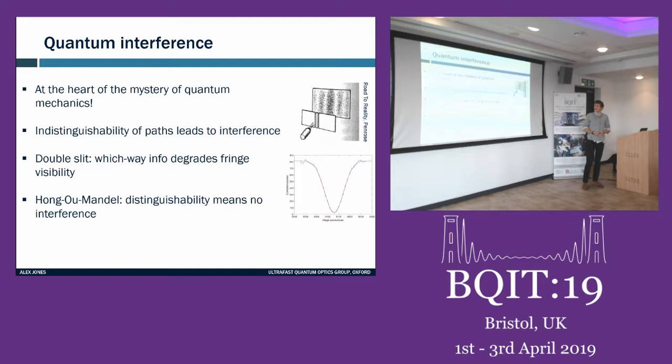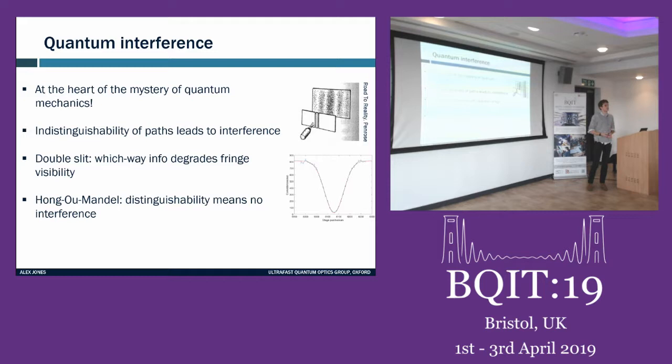Quantum interference is at the heart of the mystery of quantum mechanics. It happens whenever there are indistinguishable paths leading to the same measurement outcome. A famous example is the double slit experiment, where two different ways for a particle to reach a point on a detection screen interfere, giving a fringe pattern. Any information that distinguishes which path the particle took degrades that interference.